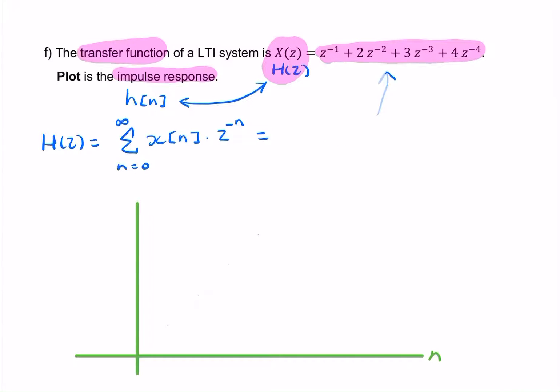So what we want is h of n, so what we should be looking at is these coefficients. So we have a 1 here, a 2 here, a 3 here, and a 4 here.